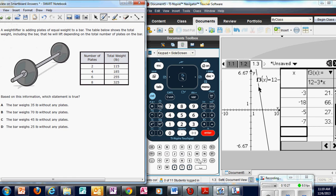A weightlifter is adding plates of equal weight to a bar. The table below shows the total weight, including the bar, that he will lift depending on the total number of plates on the bar. So you have a table, your X or independent values on the left, your Y or dependent values are on the right. And the question is, based on this information, which statement is true? All the answer choices look exactly the same except for the number. So we want to know the bar's weight without any plates. The bar's weight without any plates would be your starting point, your Y intercept. So we want to know what that plus B is.